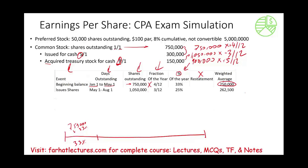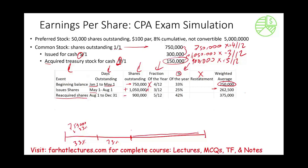From May 1st to August 1st, we issued shares — shares increased to 1,050,000 outstanding for 3 months, which is 25% of the year. That gives a weighted contribution of 262,500 shares. Then we reacquired treasury stock, leaving 900,000 shares for the remaining 5/12 of the year — about 42% — contributing 375,000 weighted shares. The percentages roughly add to 100%.